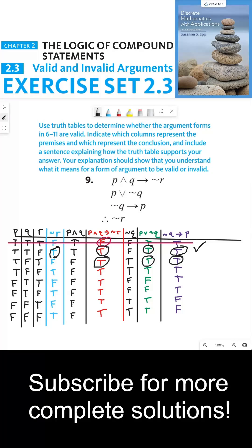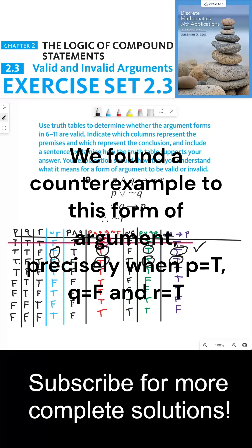This means that we found a counterexample to this form of argument, precisely when P is true, Q is false, and R is true. In that specific example, that would be our counterexample to this form of argument.